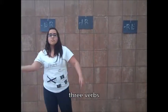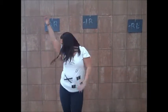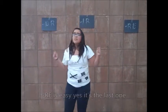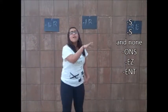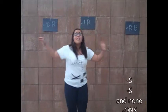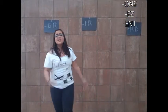ER and IR, RE — river. RE, RE, RE — RE is easy! Yes, it's the last one. It's as simple as this: -s, -s, -a, -nons, -ons, -ez, -ent. ER and IR, RE — states the verb ER, IR, and RE. States the verb: -s, -s, -a, -nons, -ons, -ez, -ent. Thank you!